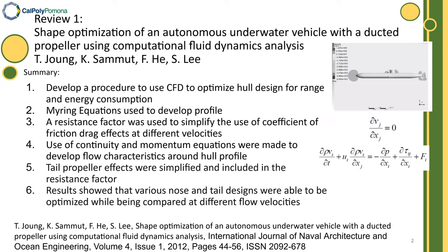Our first review is the shape optimization of autonomous underwater vehicles with ducted propellers using computational fluid dynamics. This study developed a procedure to use CFD to optimize hull design using Morison equations. A resistance factor is used to simplify the coefficient of friction drag, and continuity momentum equations were also applied. Results showed that various nose and tail designs were optimized and compared at different flow velocities.